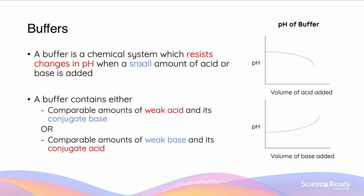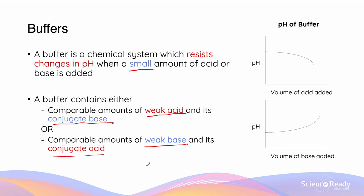A buffer is a chemical system which resists changes in pH when a small amount of acid or base is added. The buffer contains either a comparable amount of weak acid and its conjugate base, or it can be a weak base and its conjugate acid. It's important to recognise that you cannot create a buffer with a strong acid or base, and we'll discuss why that is later.